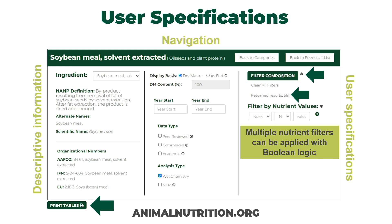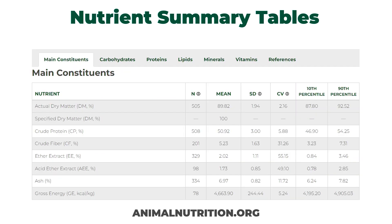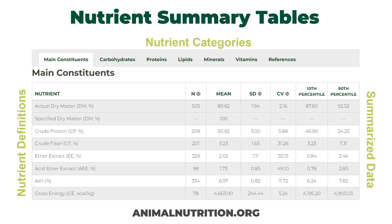We still have the ability to print those tables for offline use based on the filters you've applied, but applying a different filter will return different results. The summary tables on the bottom of the webpage show individual nutrient categories as tabs — main constituents, carbs, protein, lipids, minerals, vitamins — and a references tab where citations from peer-reviewed literature are listed. On the left are the individual nutrients, and in the future you'll be able to click those to see definitions and the actual analysis performed.